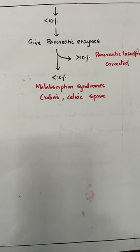If the estimated B12 is still less than 10%, give pancreatic enzymes and repeat the test. If the result is then more than 10%, it indicates pancreatic insufficiency. If it remains less than 10%, the cause is a malabsorption syndrome such as Crohn's disease or celiac sprue.